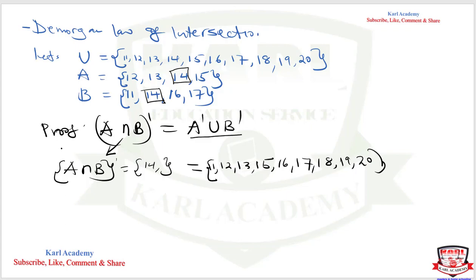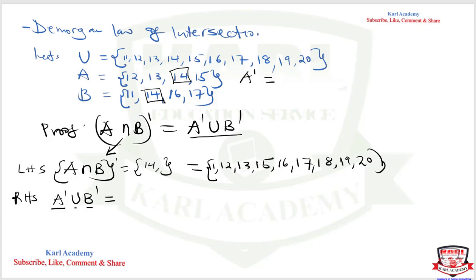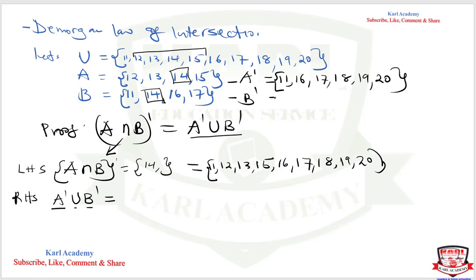Now we work on the right-hand side: A complement union B complement. A complement consists of elements in the universal set that are not in A. Since A contains 12, 13, 14, 15, we exclude those. A complement is therefore: 11, 16, 17, 18, 19, 20.